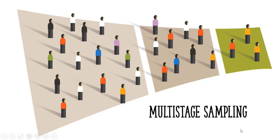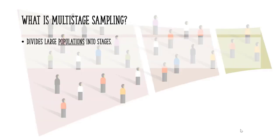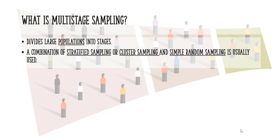In this video, I'll show you what multi-stage sampling is, I'll go over some advantages and disadvantages, and a few real-life examples. Multi-stage sampling divides large populations into stages, which makes the sampling process more practical. Any combination of stratified sampling, cluster sampling, and simple random sampling is normally used.